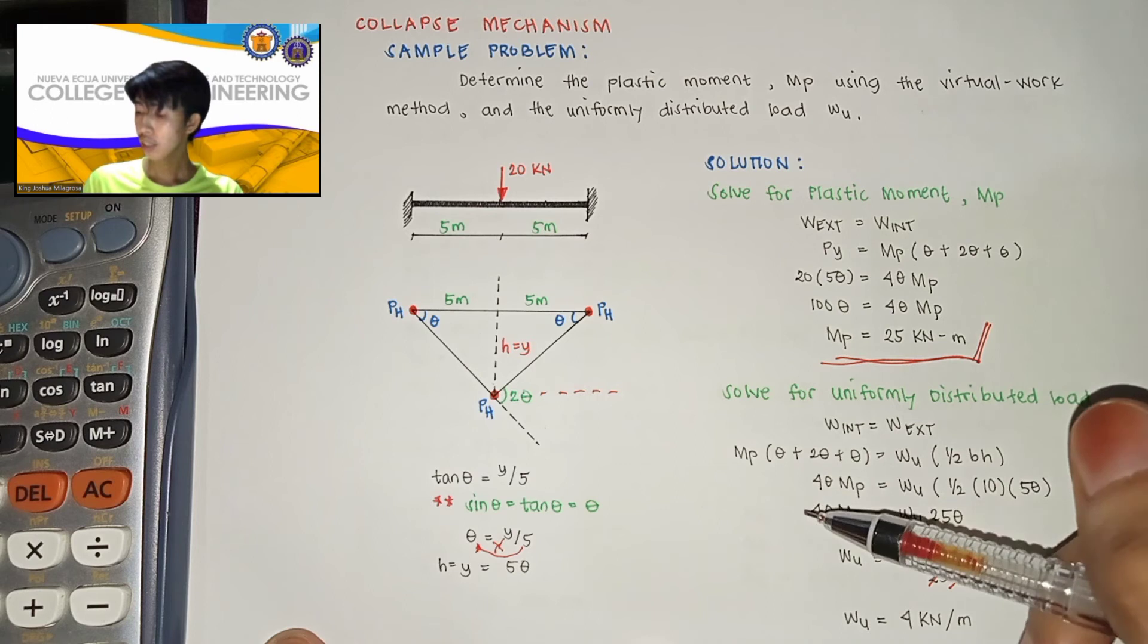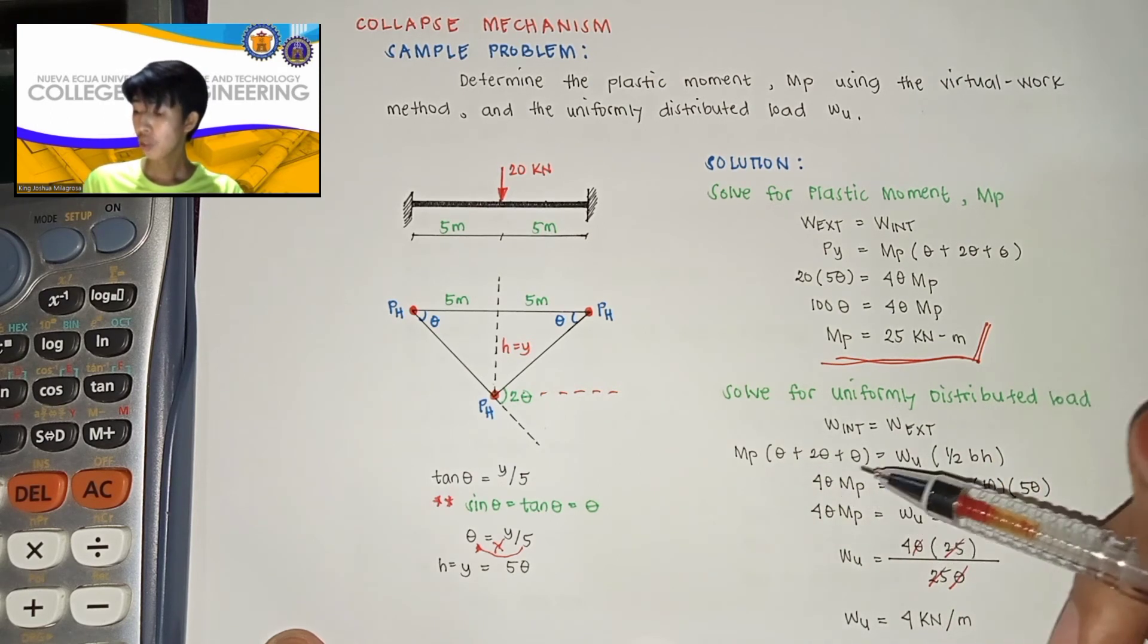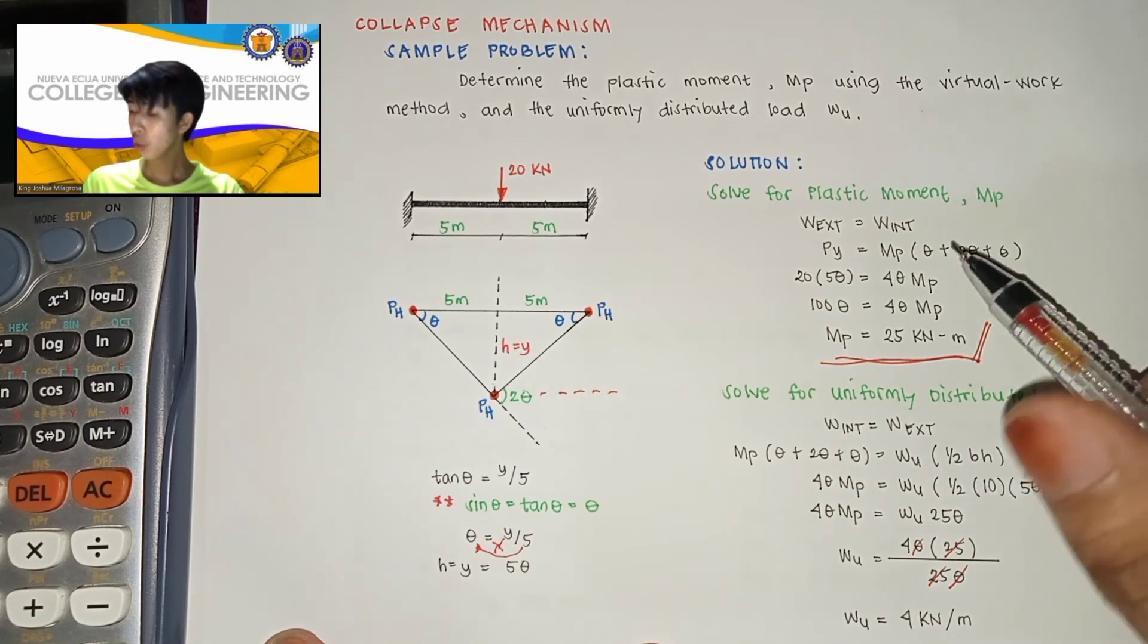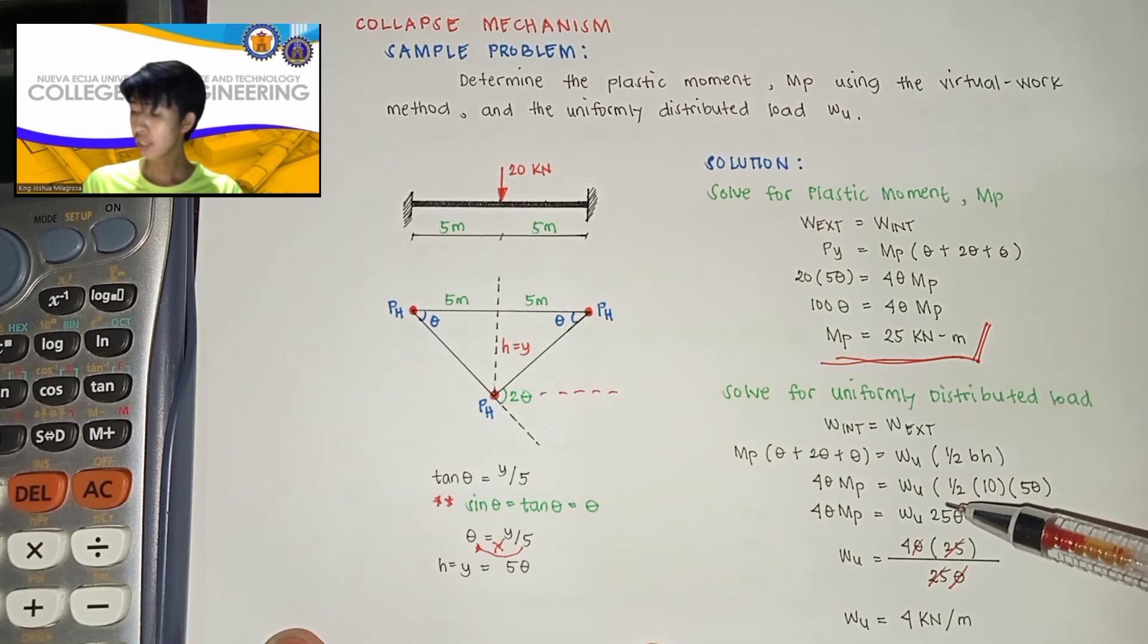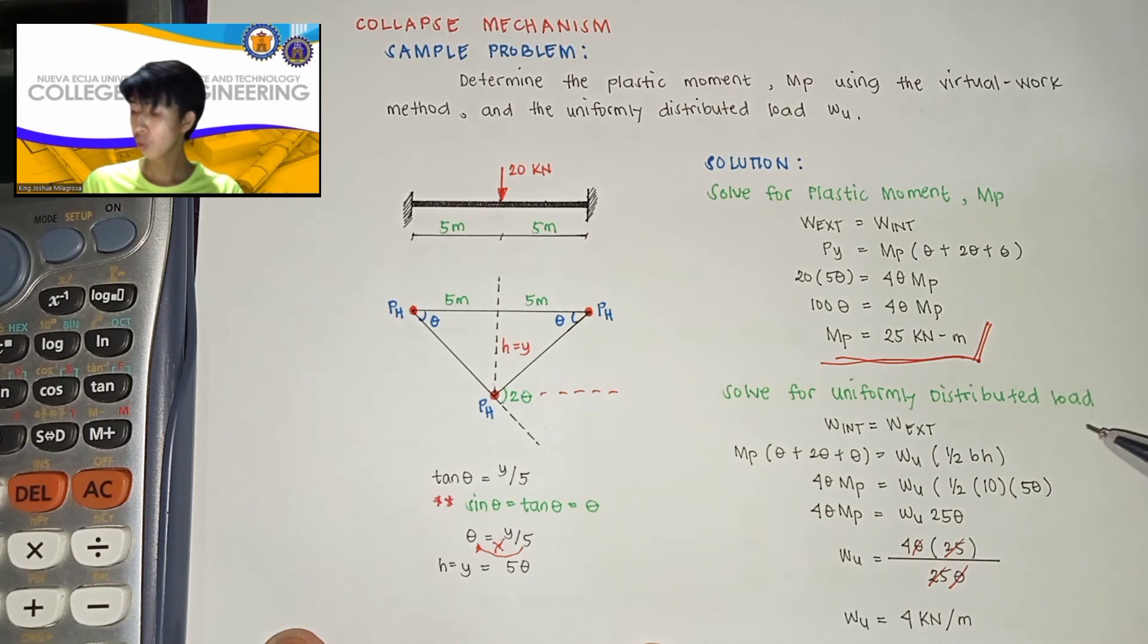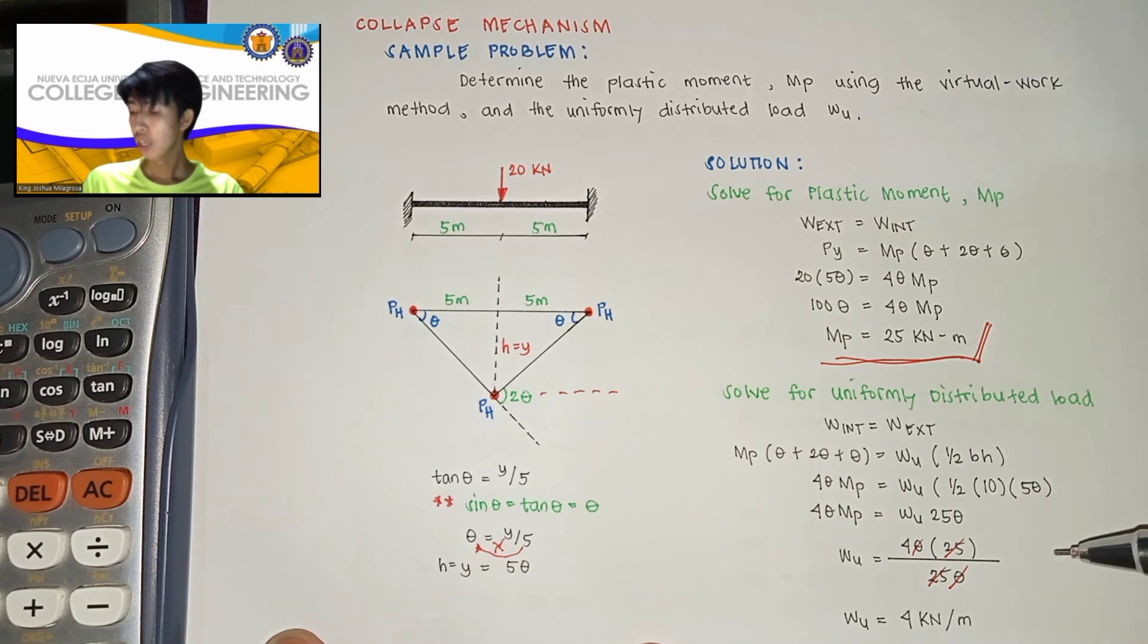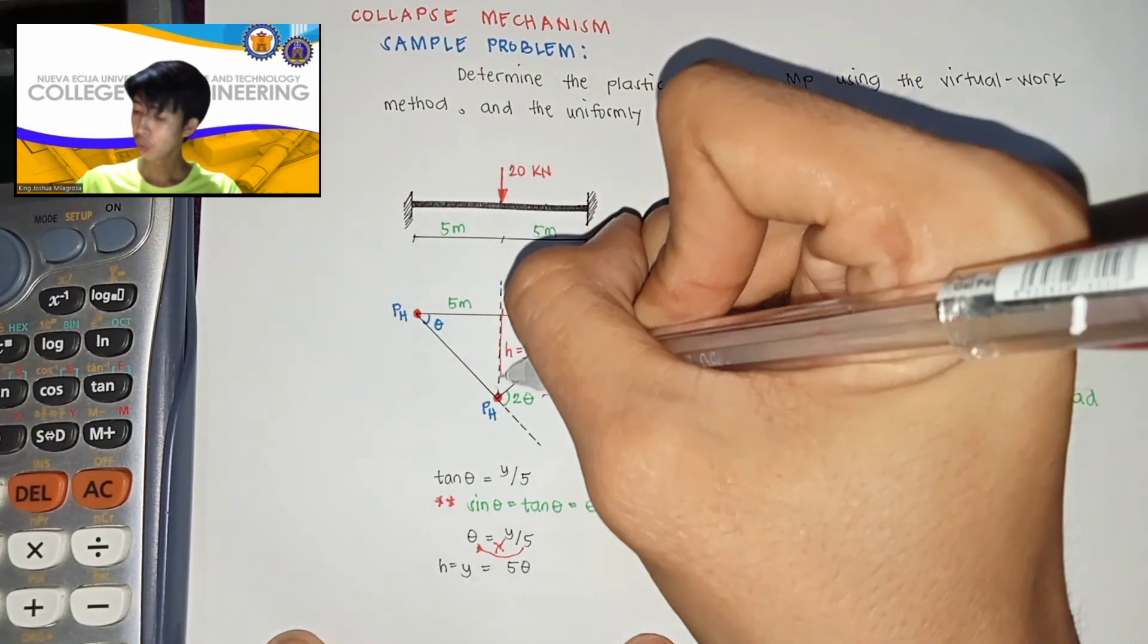Since gaya dun sa plastic moment natin, internal work done is equal yan sa MP times the summation of thetas, then dito naman yung external work done is equal na yan sa W or sa uniformly distributed load. Since yun yung hinahanap natin,